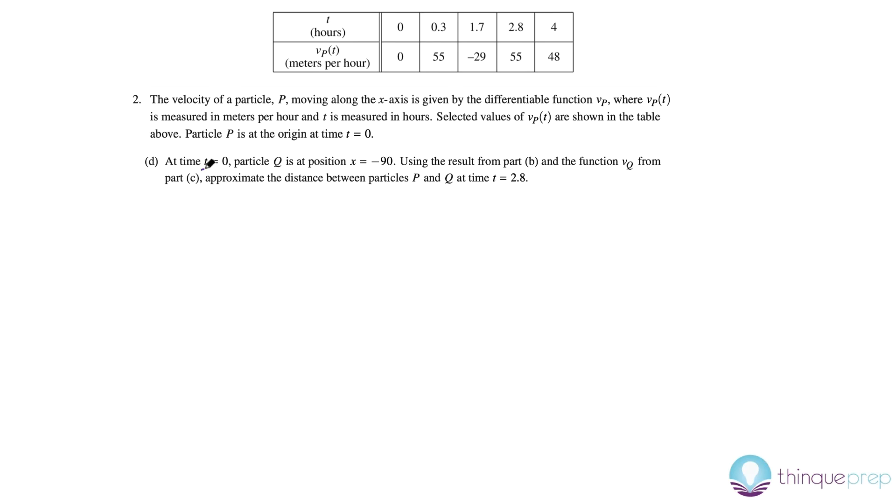So, part D says at time t equals 0, the particle Q at position x is negative 90. And using the results from part B and the function from part C, approximate the distance between the two particles at time 2.8. Well, from part B, we got that the integral from 0 to 2.8 of vp(t) is equal to 40.75. And what you do need to know is that when you take the integral of the velocity without the absolute value, that's the displacement. So, that's basically how far you moved from the beginning. And notice that, according to the question, particle P at the time equals 0 is at the origin. So, this is basically saying it moved 40.75 meters from the origin. So, I could have a plus 0 over here.